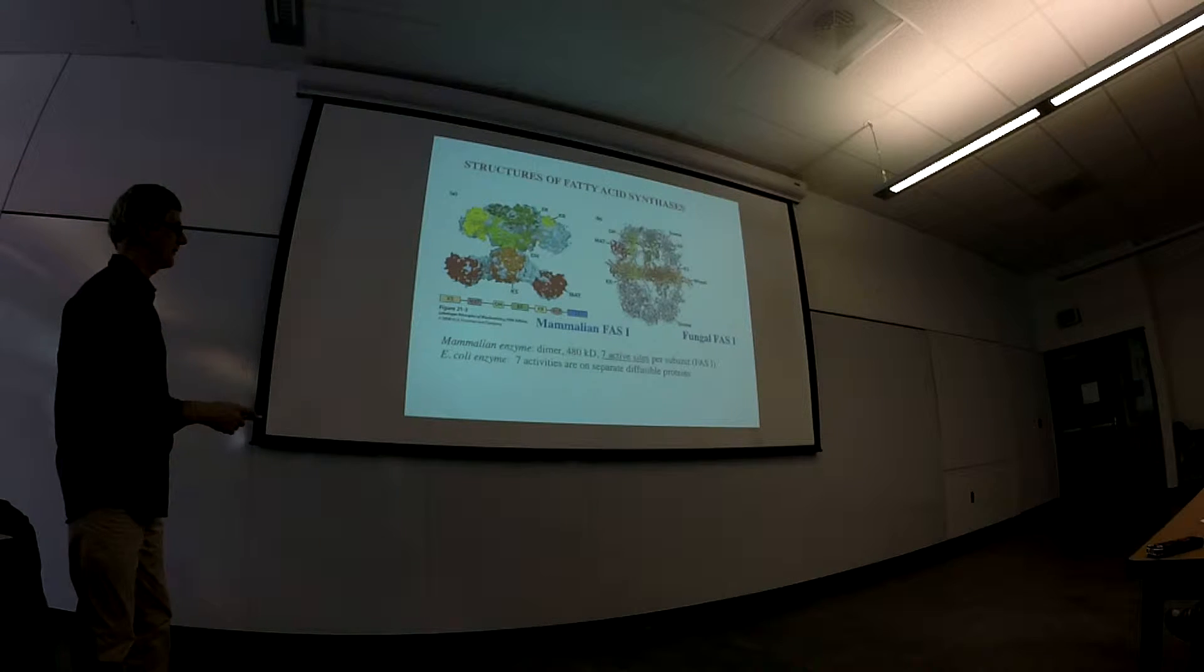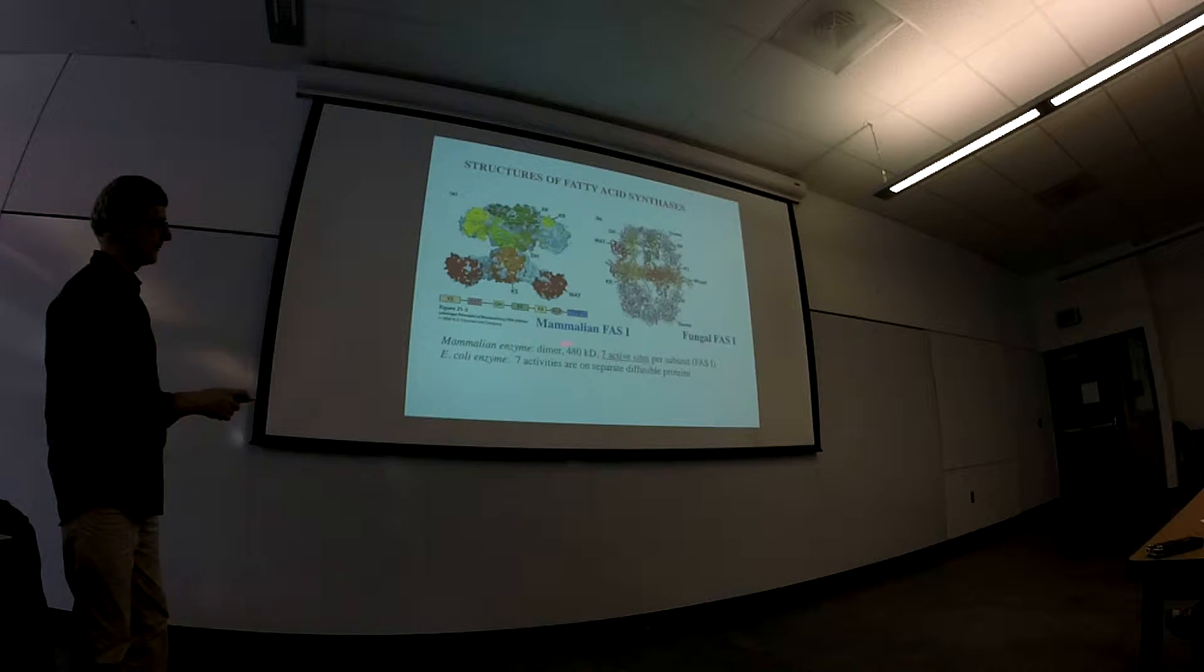We're not going to be concerned about the distinctions between different species on these enzymes. The mammalian enzyme is a dimer, and each of the two monomers has seven active sites in it.